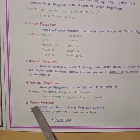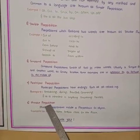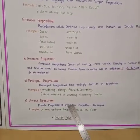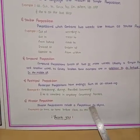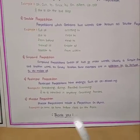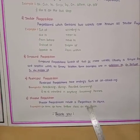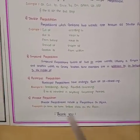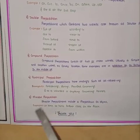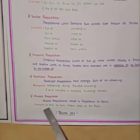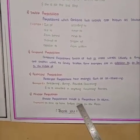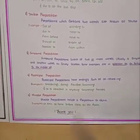Last one: Place preposition. Place preposition includes a preposition and an object. It means place preposition includes a preposition and object, and it is called place preposition. Examples: On time, At home, Before class, On the floor. Thank you.